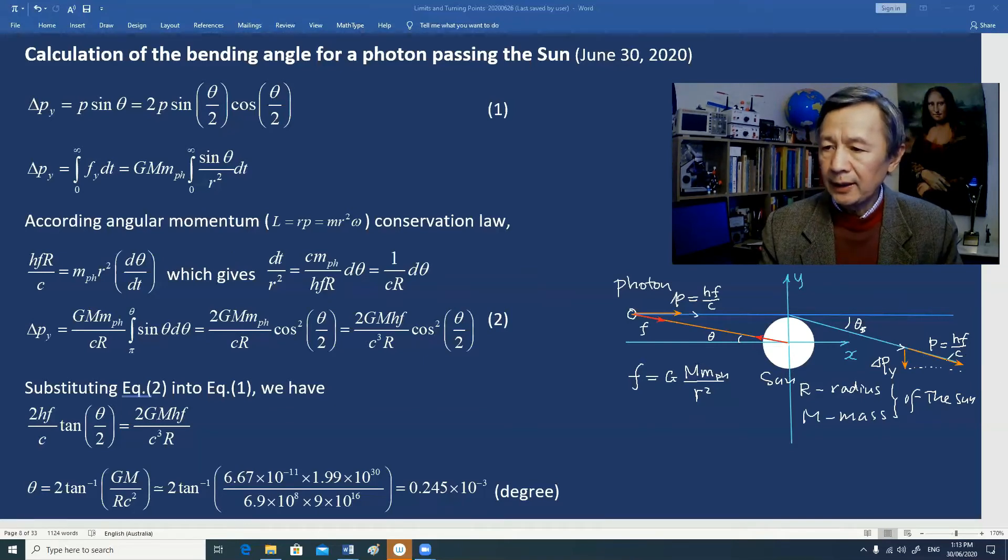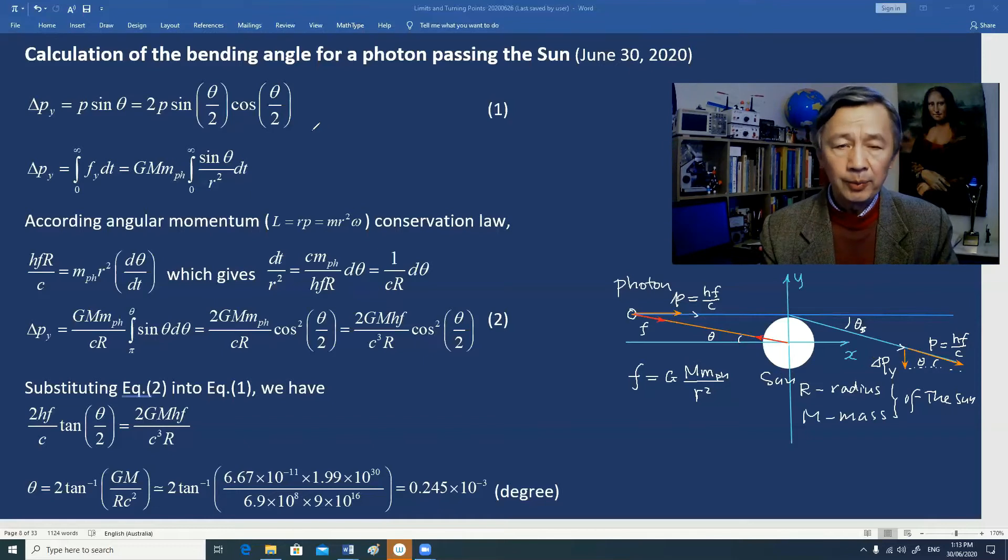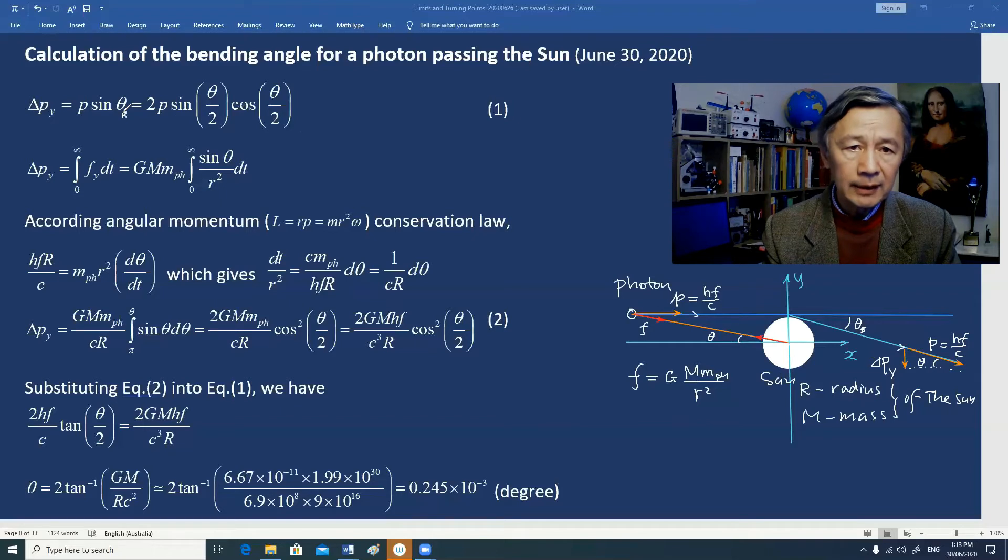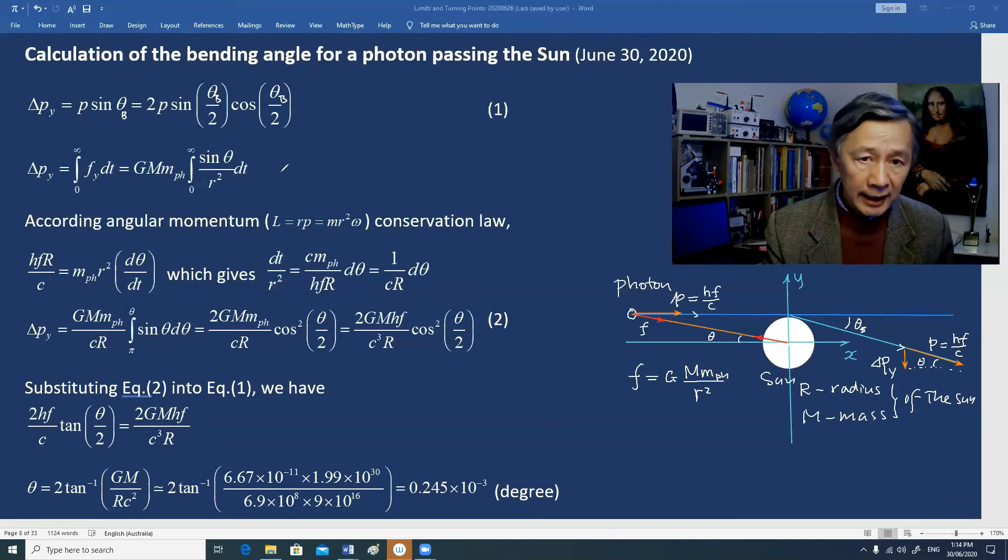If we use theta here, we have to derive this theta. After the bending, we put a subscript B here. The first equation denotes the change in the Y component of photon momentum after bending.